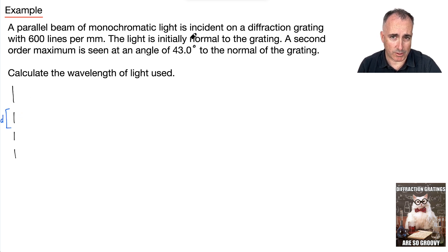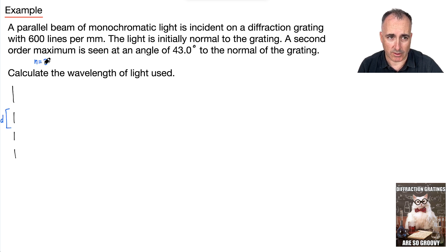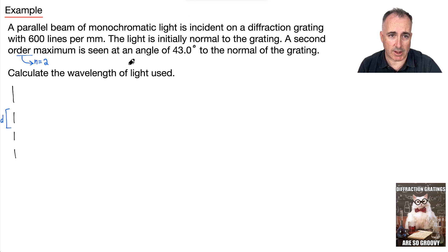I know that there is a second order maximum — that means N equals 2. It's seen at an angle, so now I know theta. Theta is 43 degrees, and it's the angle to the normal.